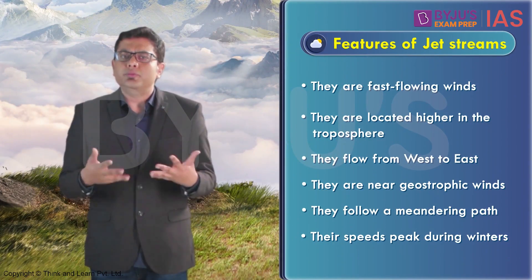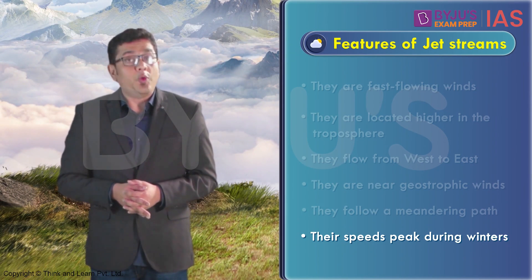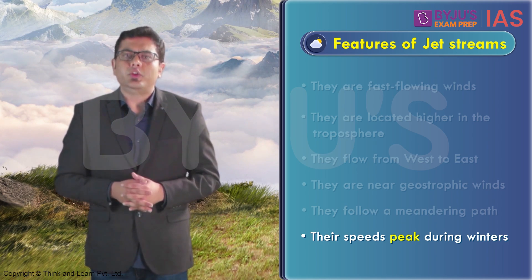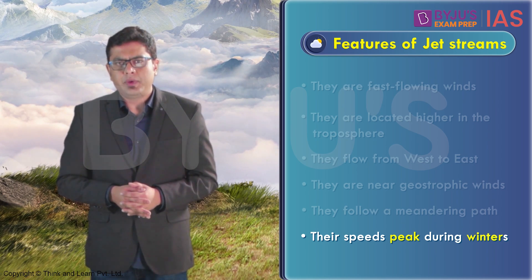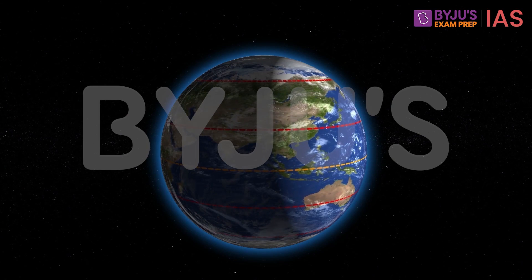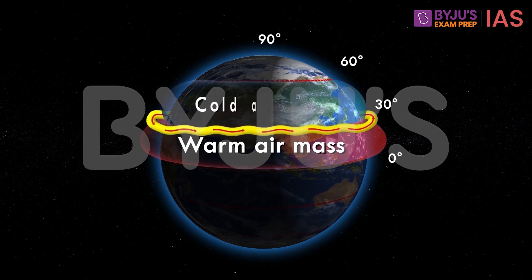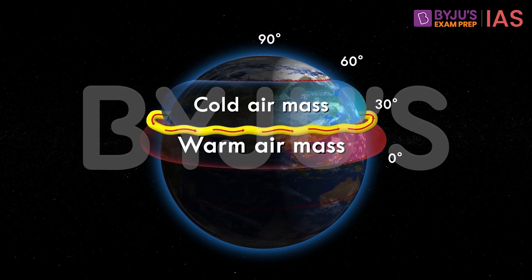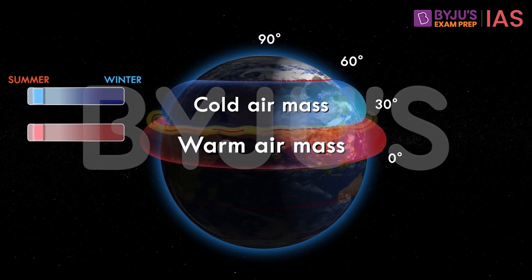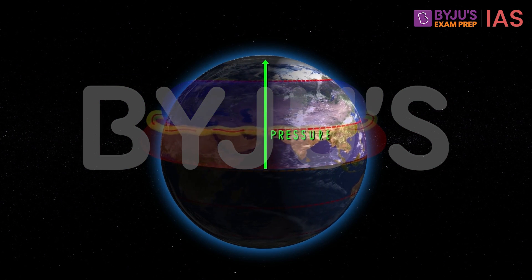Moving on to the next feature: jet streams are winds with high speed, but their speeds usually peak during the winter months. Why does this happen? Jet streams are formed due to the interaction between warm and cold air masses. During winters, the contrast between the cold and the warm air masses is much more pronounced, and as a result there is an increase in the pressure gradient force.